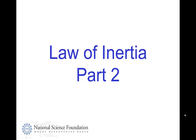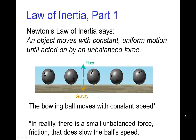Law of Inertia, Part 2. So in Part 1, we saw that Newton's Law of Inertia, which is also known as Newton's first law of motion, says that an object moves with constant uniform motion until acted on by an unbalanced force. In this example of a bowling ball rolling on the floor, the weight of the bowling ball — that downward force of gravity — is being balanced by the upward support of the floor.